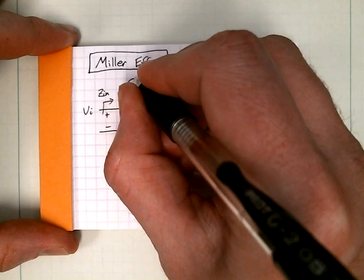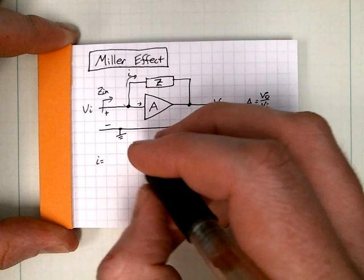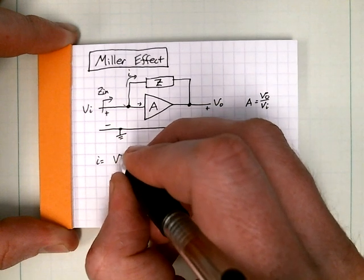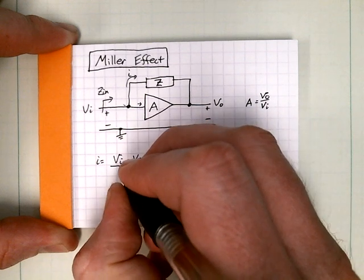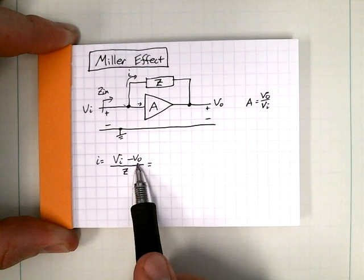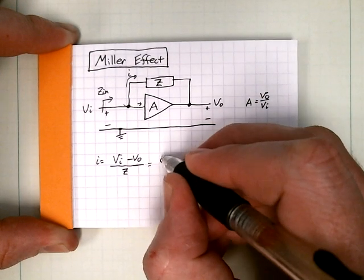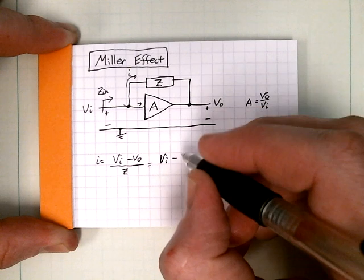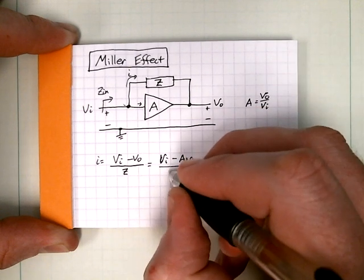All right, what is this? What's this current i? Well, i is vi minus vo over z. Hey, check this out. I already know what vo is, vo in terms of vi. I can solve for that. So it's vi minus A times vi over z.